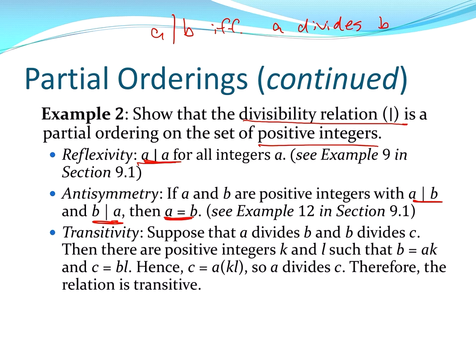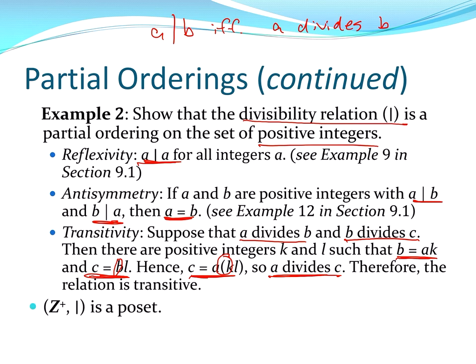And transitivity: if a divides b and b divides c, then b is a multiple of a and c is a multiple of b. Substituting ak in for b, we get that c is a multiple of a, so a divides c. It is transitive. We write this as the positive integers together with the divides relation.